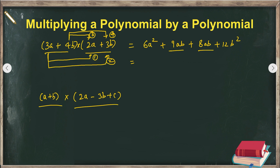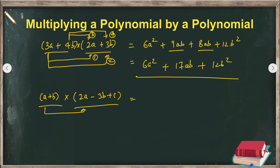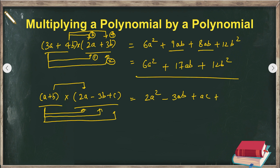For (3a + 4b)(2a + 3b): step one, 3a × 2a gives 6a². Step two, 3a × 3b gives 9ab. Step three, 4b × 2a gives 8ab. Step four, 4b × 3b gives 12b². Now we look for like terms: 9ab and 8ab are like terms, so we add them. The result is 6a² + 17ab + 12b².